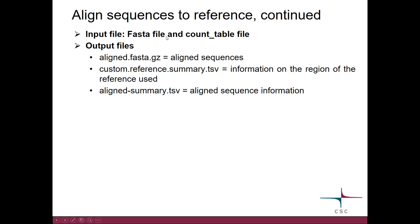As input you need to give the FASTA file and the count table file. As output you get the aligned sequences and two summary files. One is for the reference, telling about the region that you selected to use, and the other summary file tells about your own sequences in the alignment.